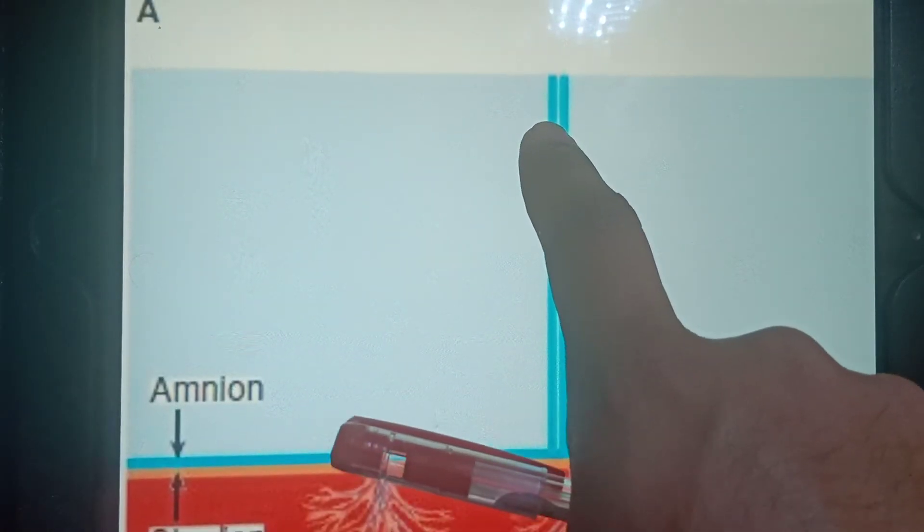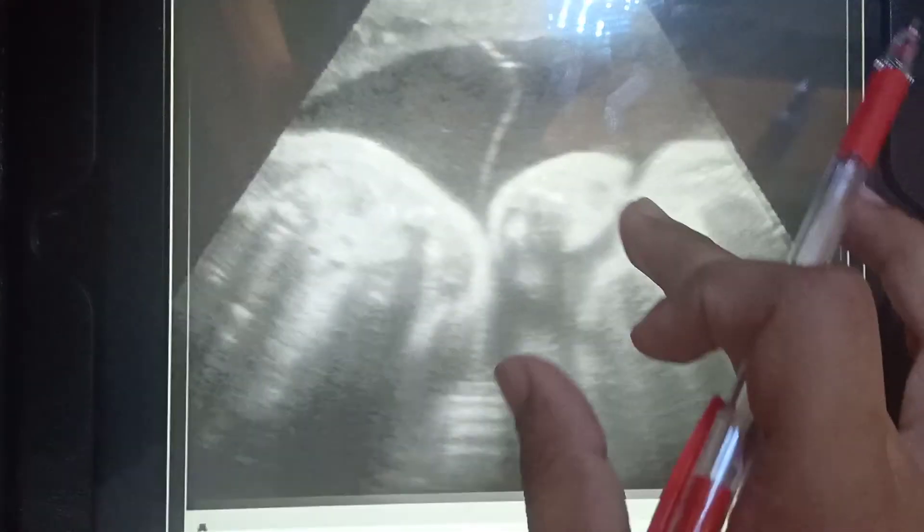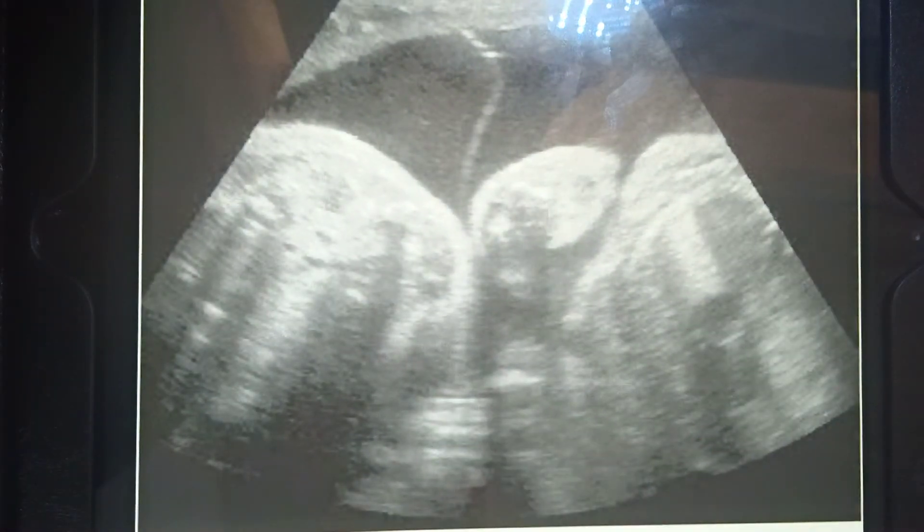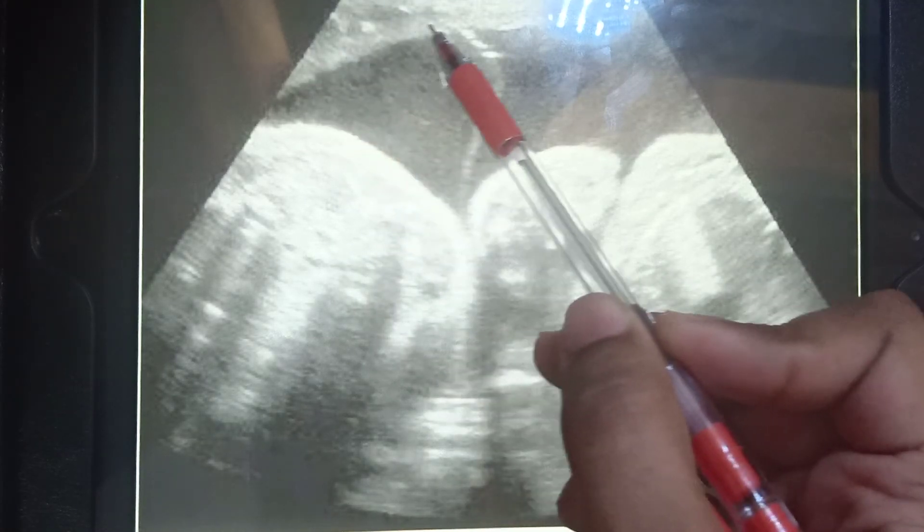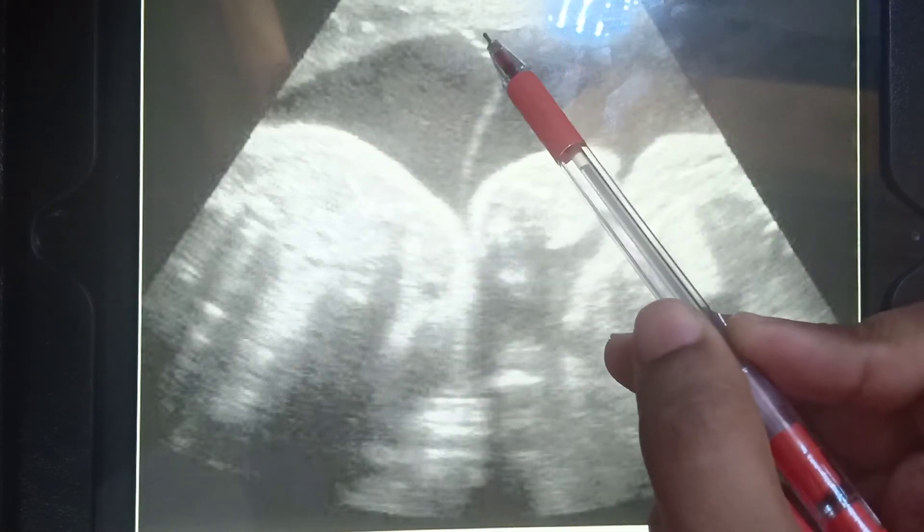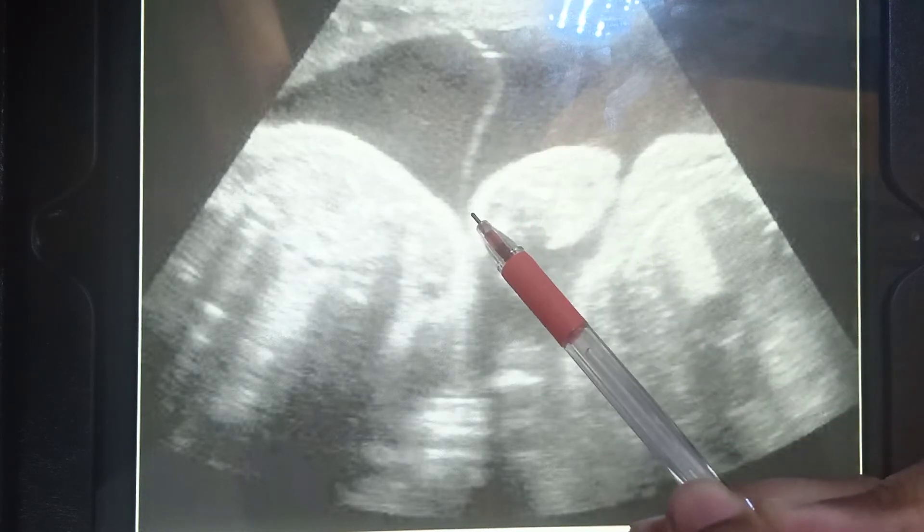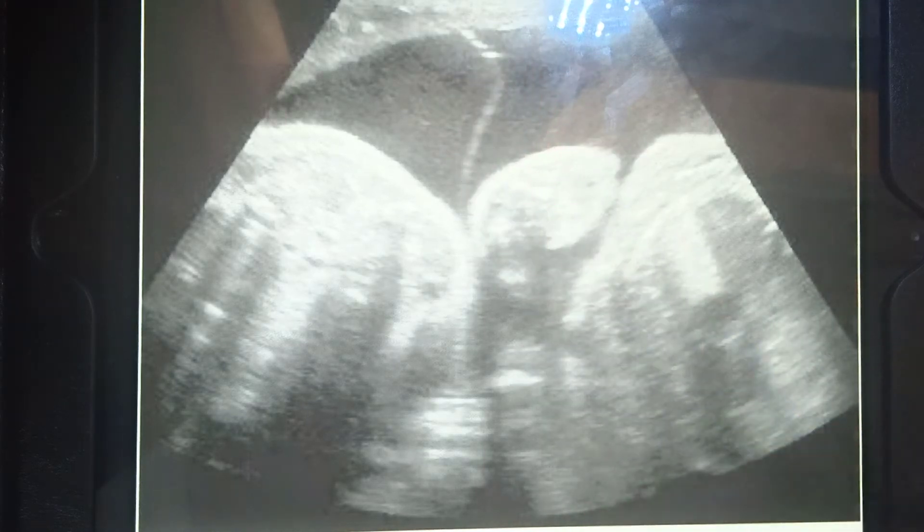Now I'll show you how it looks on an ultrasound. As you can see, this is the T sign. This is one amniotic layer, this is the second amniotic layer, so it forms a T. This is T sign.